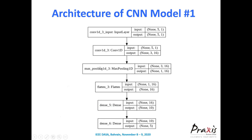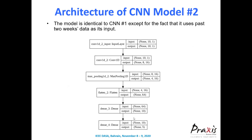CNN Model 2 is structurally similar to CNN1. The only difference is that it uses two weeks of prior data instead of one week, so the input shape is 10 instead of 5. The remaining network architecture stays the same.